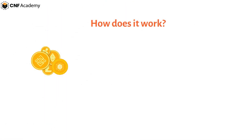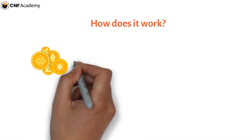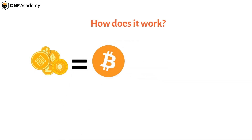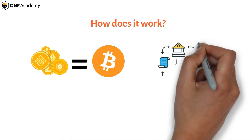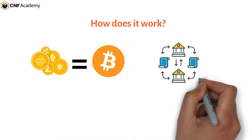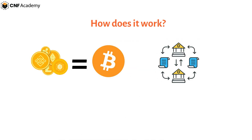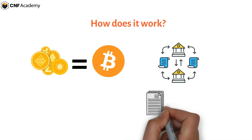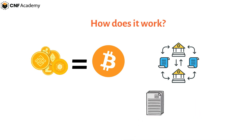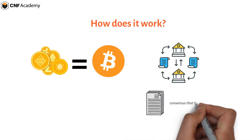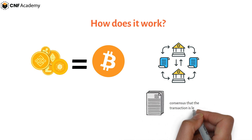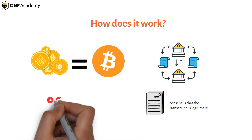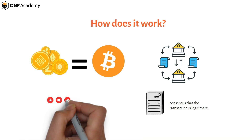How does it work? Altcoins have the same premise as bitcoin: to use the blockchain as an incorruptible distributed public ledger which allows and records transactions only if there is a consensus that the transaction is legitimate.